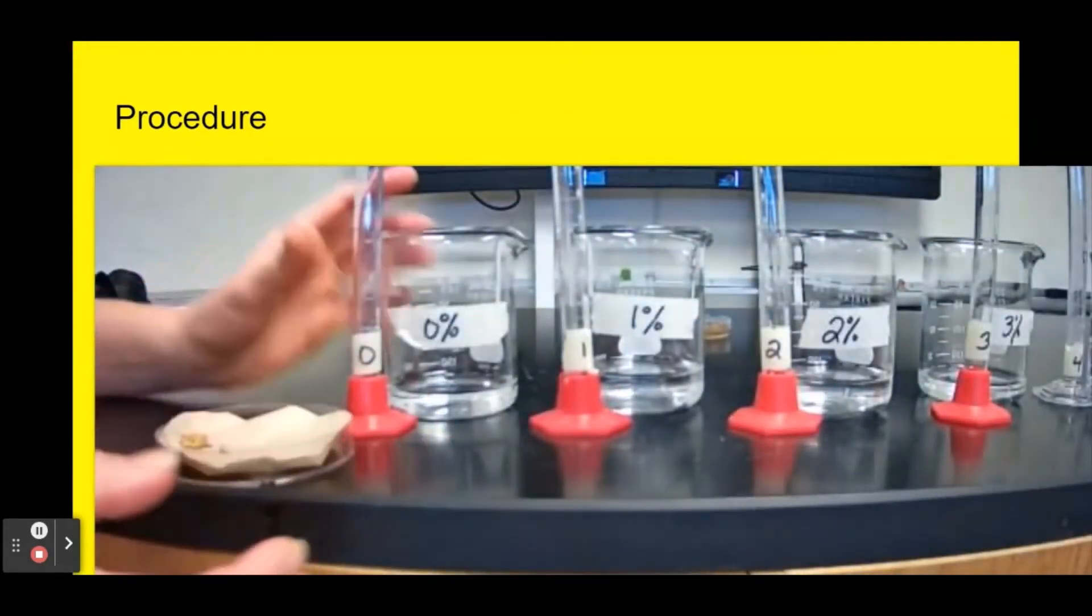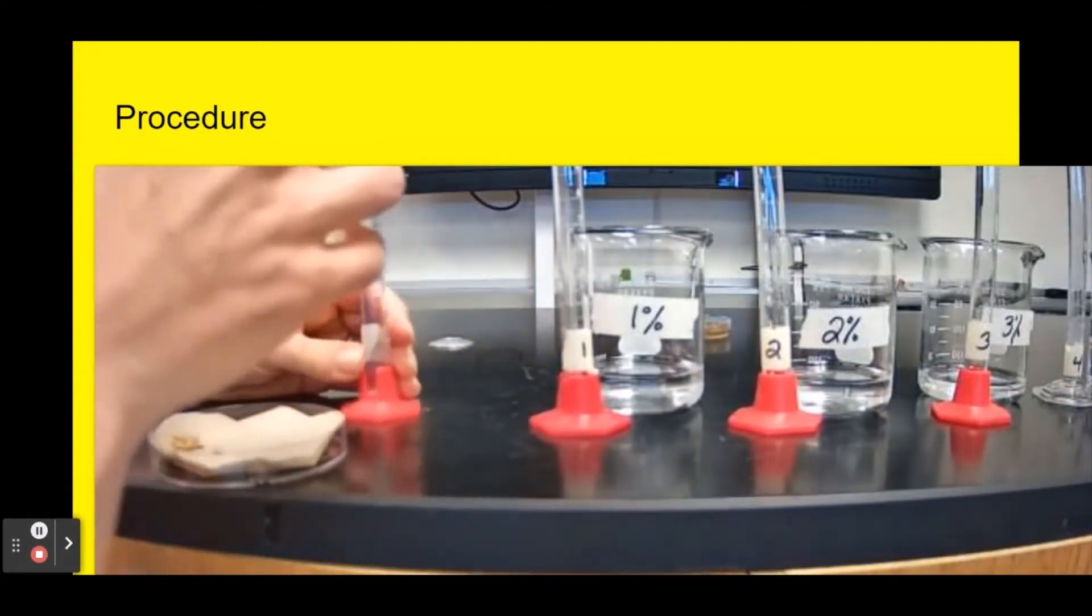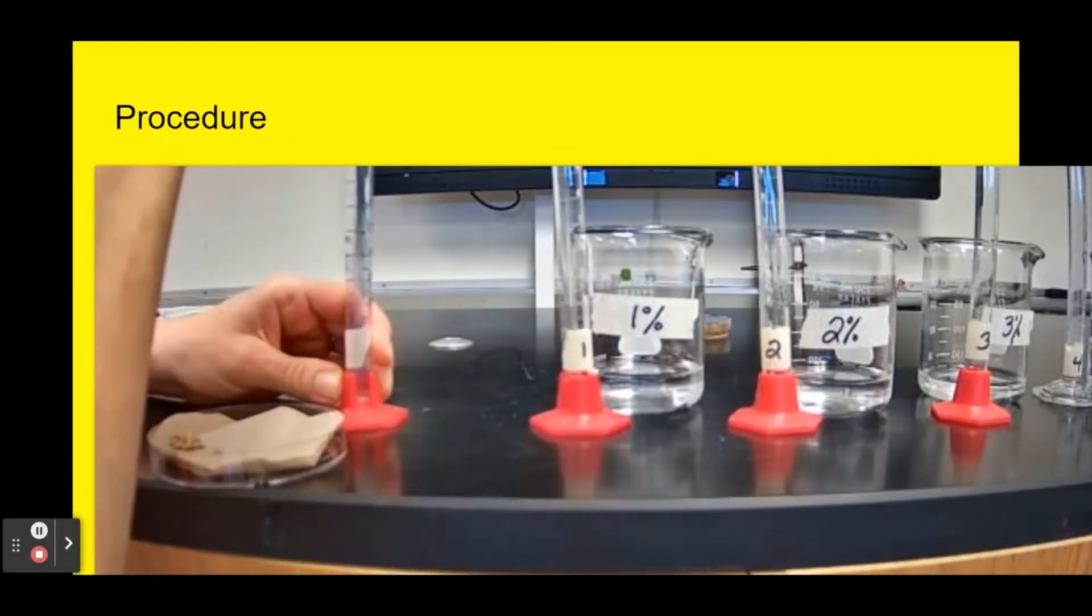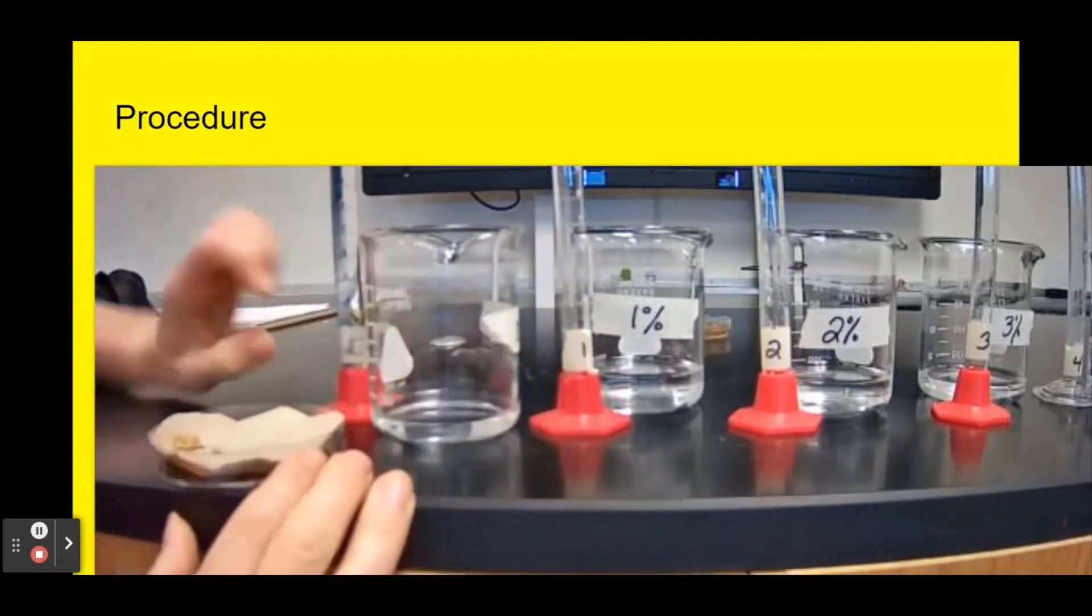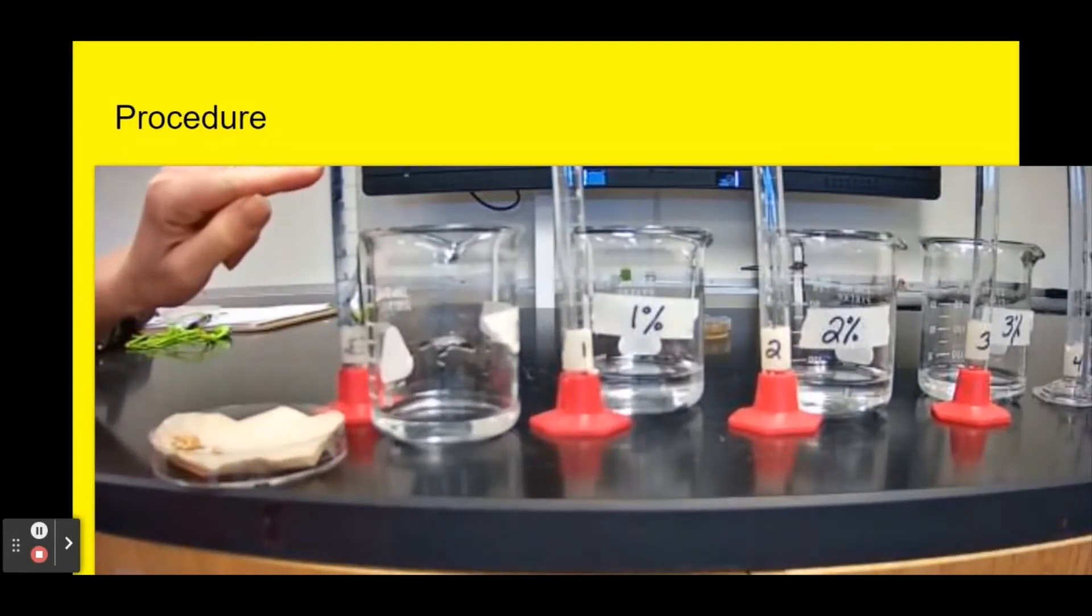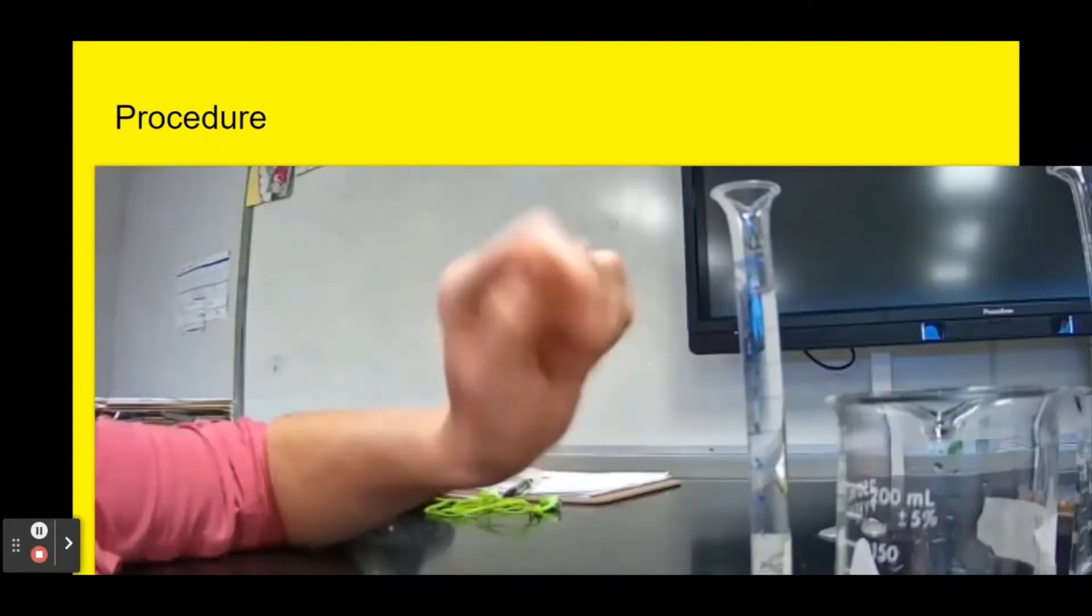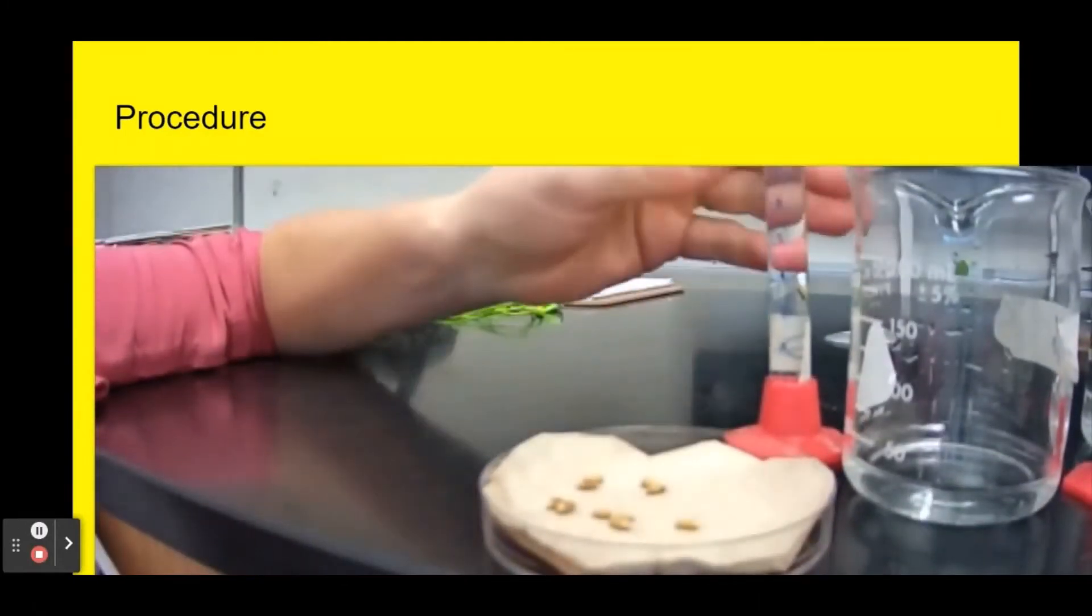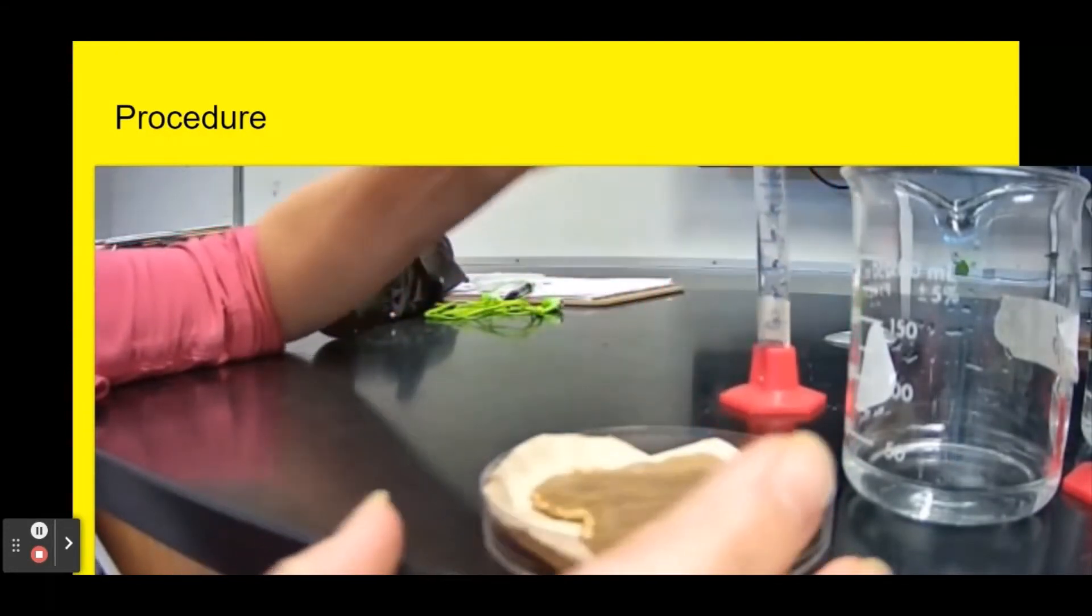Here I am with my zero percent solution, so this is just water. This will be my control group so I will know how the seeds perform without any simulated acid rain. You got to make sure you are at eye level so that you can see that the bottom of the meniscus is at 10. I'm going to spread my seeds out a little bit on my tray and pour in 10 milliliters of water.